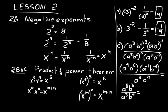Now simplify further. For the a's: a to the eighth divided by a to the third gives a to the fifth — you can move a to the third up to the numerator and change the sign, giving 8 minus 3 equals 5. For the b's: b to the third divided by b to the fourth gives b to the negative one, but since we want all exponents positive, leave b in the denominator. Exponents of 1 are understood and don't need to be written. The simplified expression is a to the fifth over b.